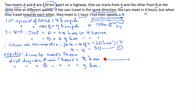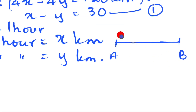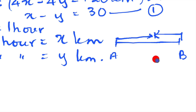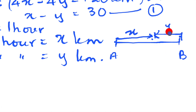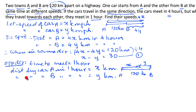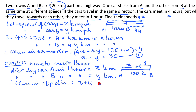Looking at the diagram: this is town A and this is town B. Car A travels this much distance and meets car B here. The distance travelled by A is x kilometers, the distance travelled by B is y kilometers, and the total distance between them is 120 kilometers. So when travelling in the opposite direction: x plus y equals 120 kilometers. That is our Equation 2.